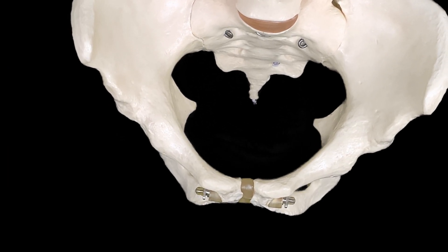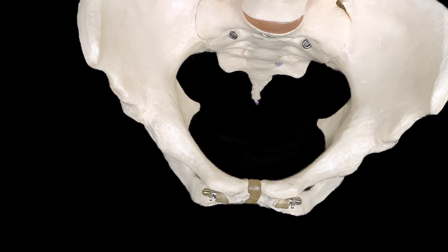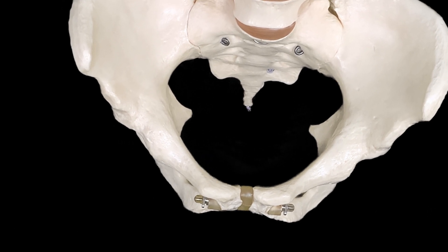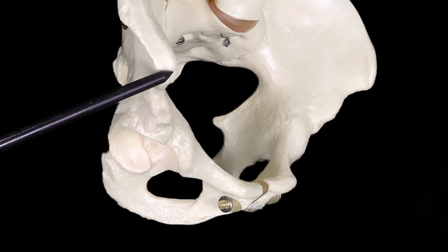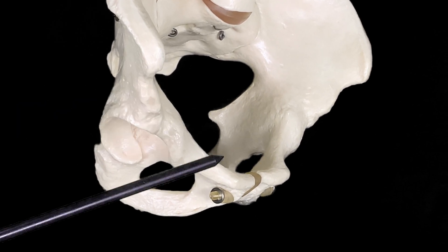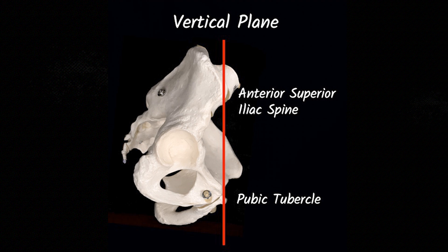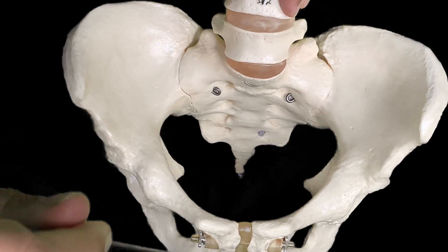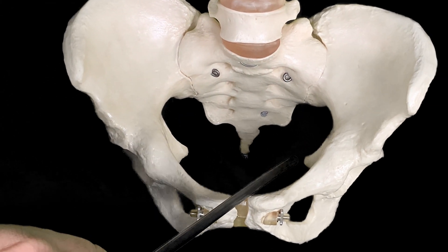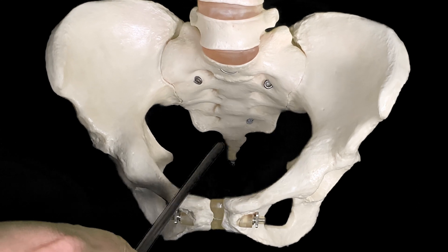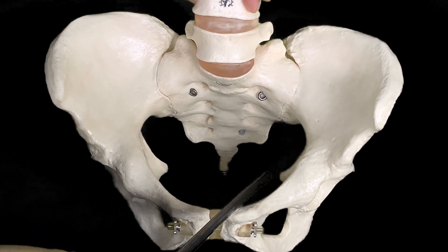In the normal anatomical position, we look from the side. The two reference points — the anterior superior iliac spine and pubic tubercle — lie in the same vertical plane. Then the pubic crest, spine of the ischium, and the coccyx lie in the same horizontal plane.